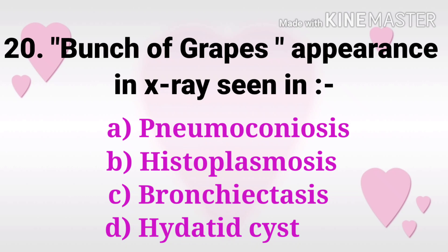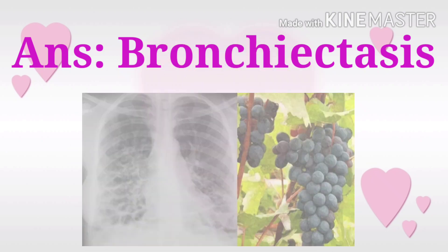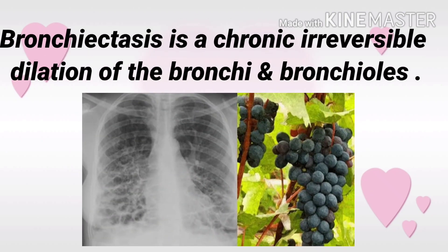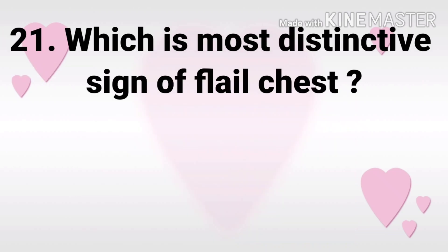Question 20: Bunch of grapes appearance on X-ray is seen in? The options are pneumoconiosis, histoplasmosis, bronchiectasis, and hydatid cyst. The answer is bronchiectasis. Bronchiectasis is a chronic irreversible dilation of bronchi and bronchioles.